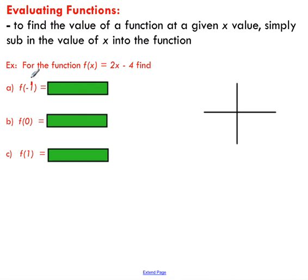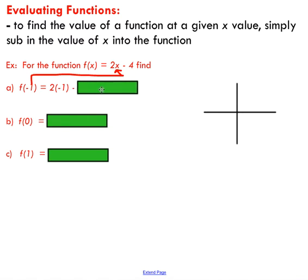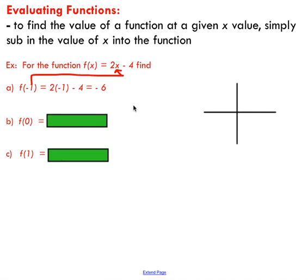I'm going to take x, which happens to be negative one in this case, and substitute it in for x — plug it in wherever you see an x in your function. So I'm going to have two multiplied by negative one, minus four. Two times negative one is negative two, minus four — I end up with negative six.